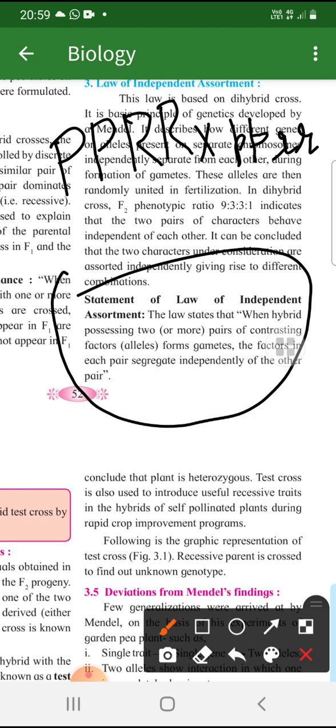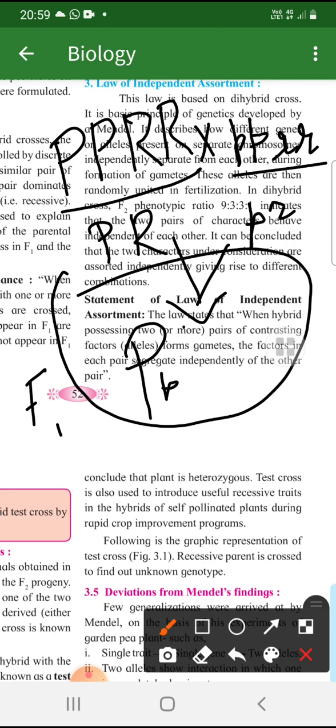Now what is going to happen we are going to make gametes. Right. So, yeh bane gamete. Iska gamete hai yeh. Right. So, ab humare paas jo F1 generation aegi. What do we get? Capital P. Small P. Capital R. And small R. Right.